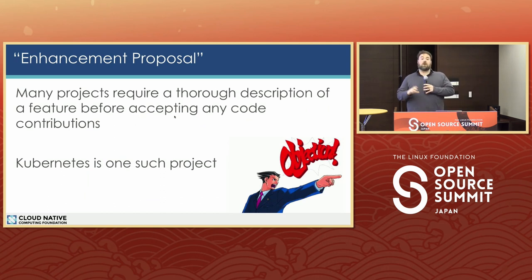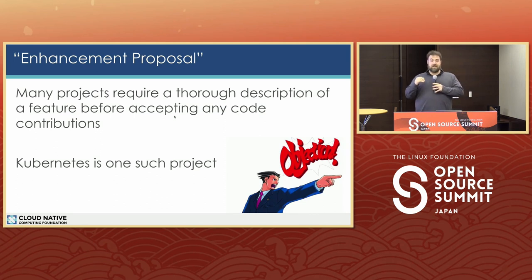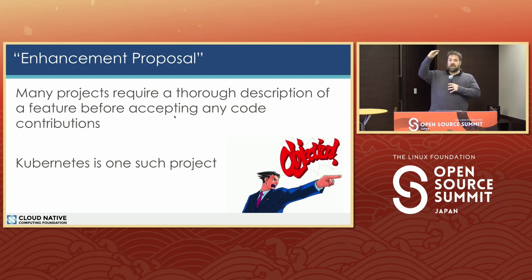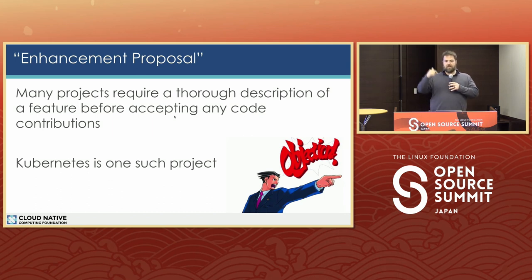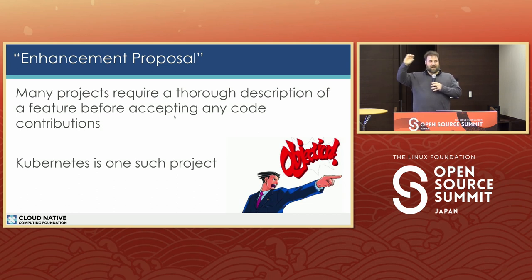Many of the larger projects have this idea of enhancement proposals — Kubernetes is one of them, for better or worse. Kubernetes and things like Python have this idea of an enhancement proposal. If you are making a large change in Kubernetes — a change that goes across multiple different SIGs, code bases, or focuses, or might impact a release — you need to write a rather large document that explains what the change is, why you're making it, how you're testing it, how the change will graduate from alpha to beta to stable, how you are going to test the change if it breaks, and how to revert it. Every single area that this code might impact has to get sign-off from the people that own that code.